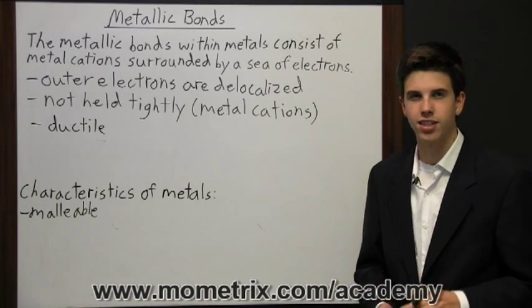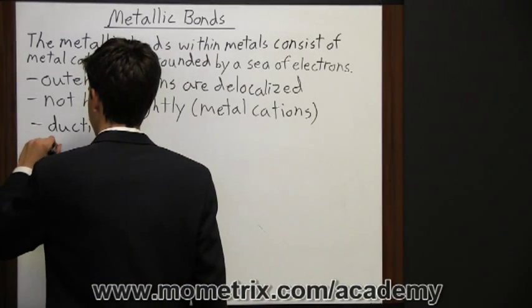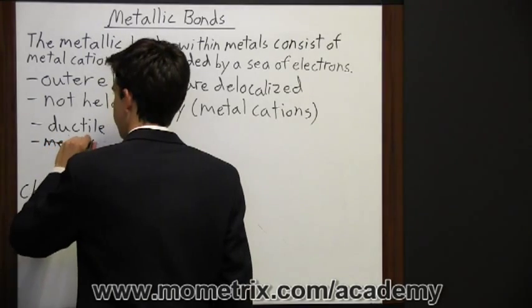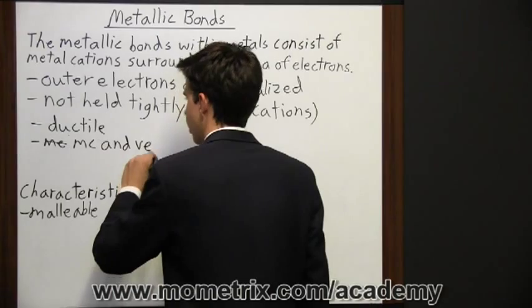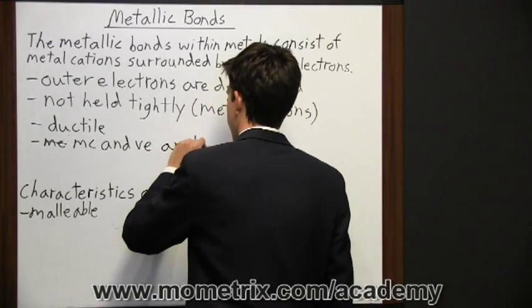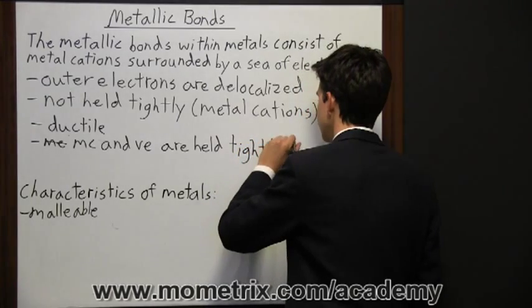Now the metal cations and valence electrons are held tightly together. So I'm going to write MC for metal cations and VE for valence electrons are held tightly together.